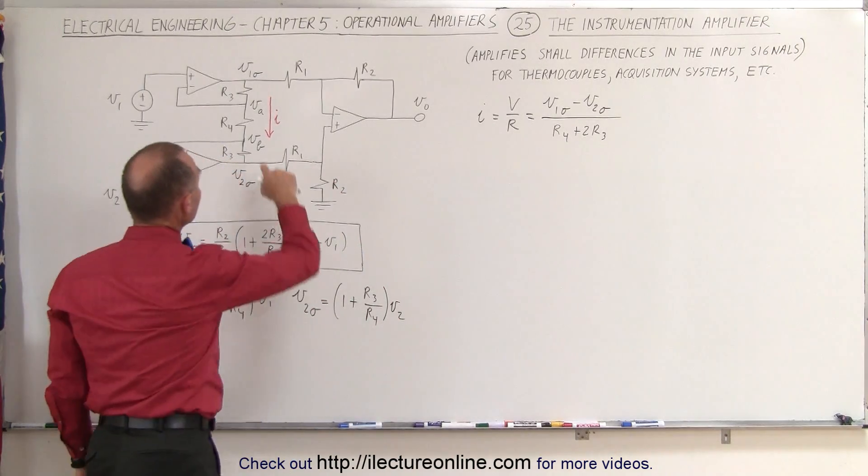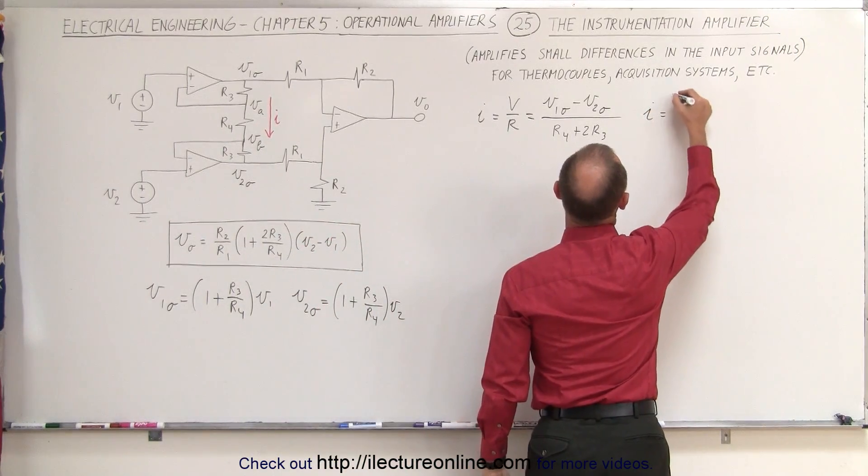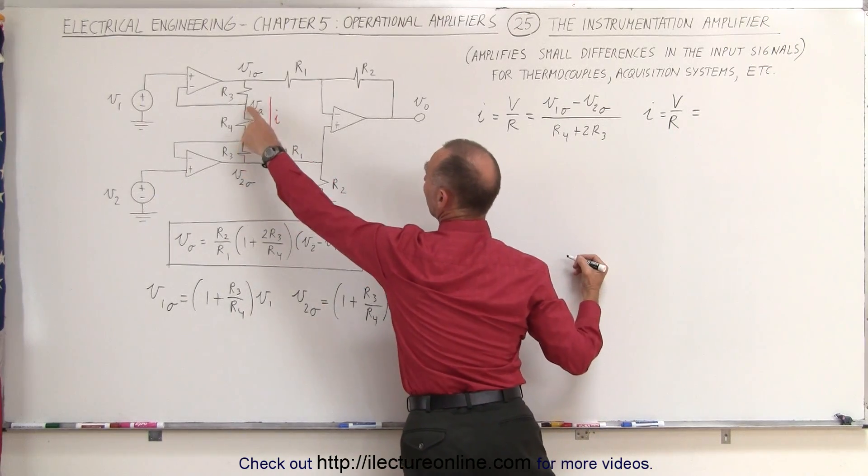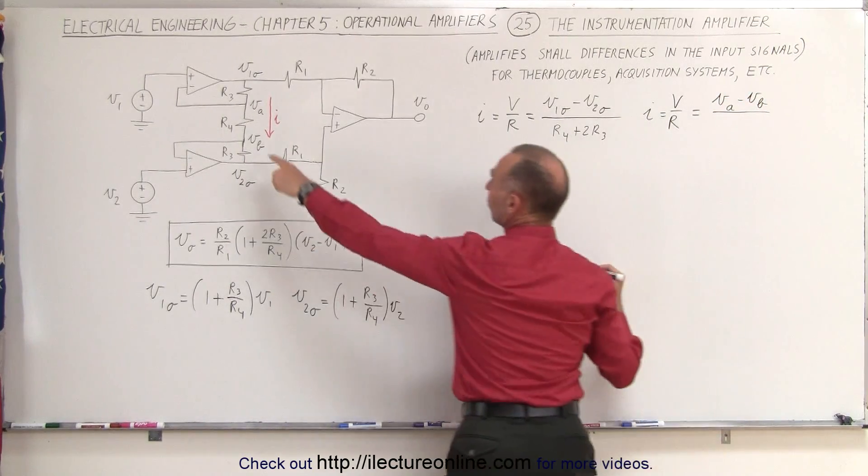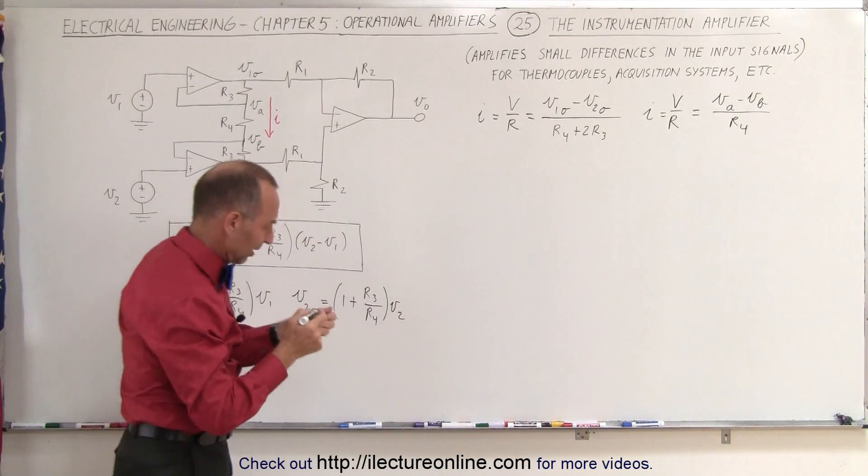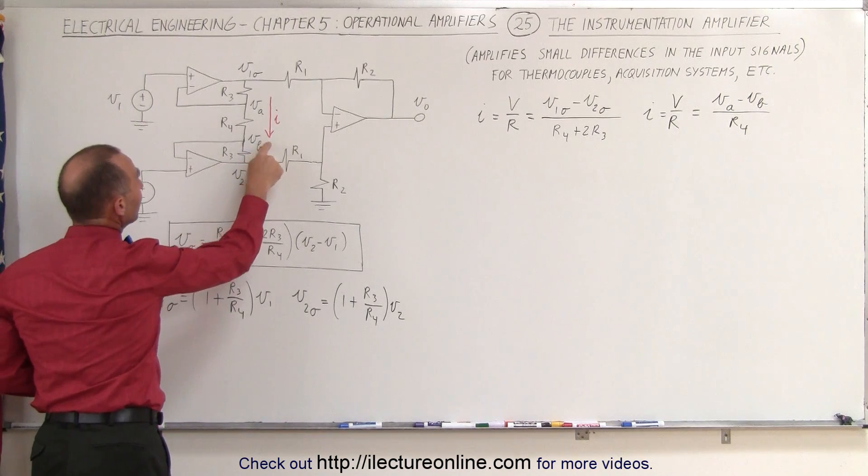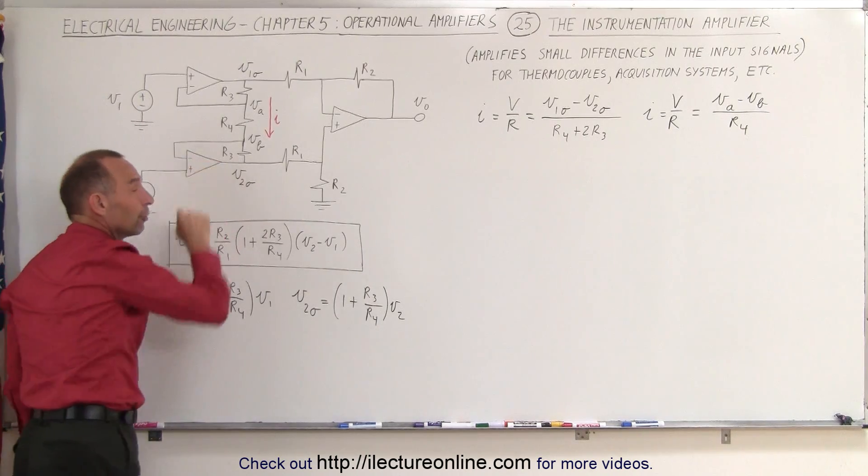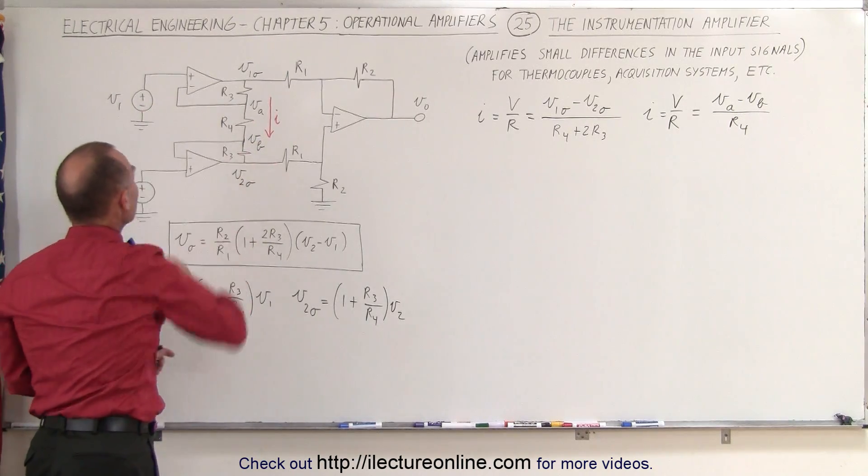We can also say that the current here between VA and VB can be defined as follows. I is equal to, again using Ohm's law, V over R is equal to the difference between the voltages between those two points and we label them VA and VB. So it would be VA minus VB divided by the resistance between those two which is R4. Now you may say, well why did we pick VA, VB? What's the significance here? Well it turns out that VA must be equal to V1 and VB must be equal to V2 because there's no voltage difference between the inverting and non-inverting terminals of an ideal operational amplifier.